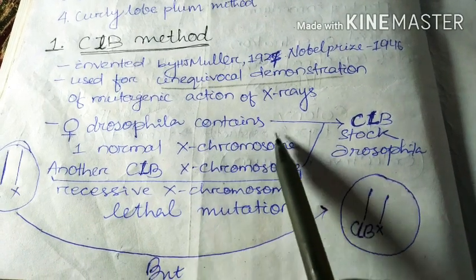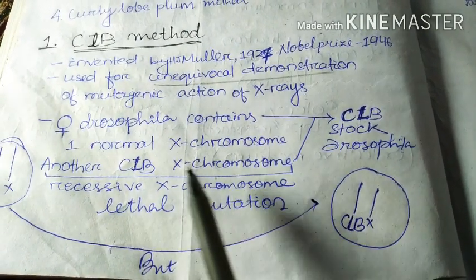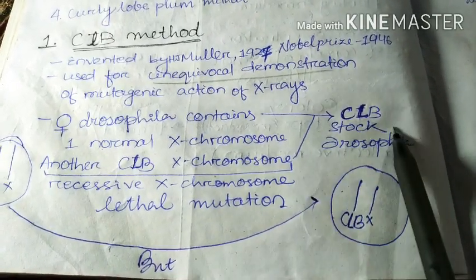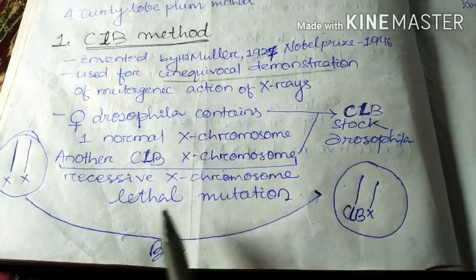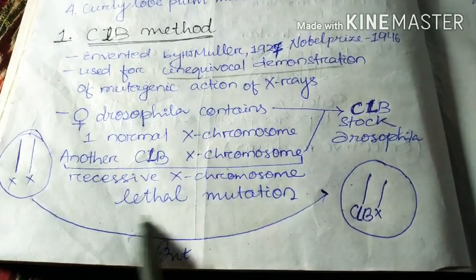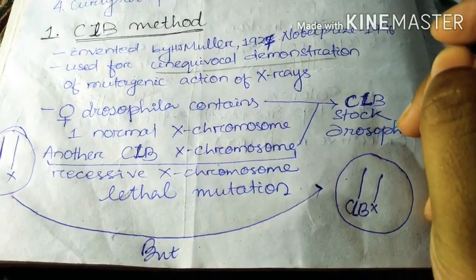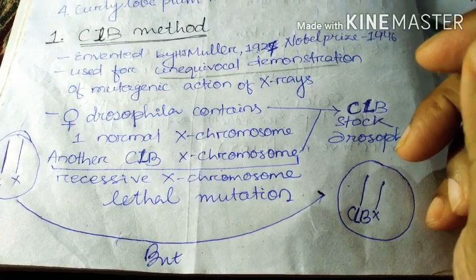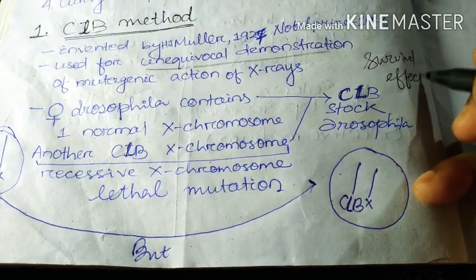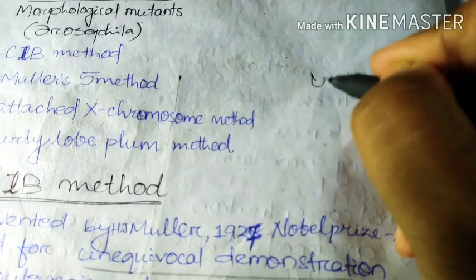The female Drosophila that contains the CLB X chromosome is called CLB stock Drosophila — meaning after treating with the CLB X chromosome, the female Drosophila are stocked or kept for the next experiments. This CLB X chromosome is the recessive X chromosome, that is the lethal mutation. Lethal mutation is of four types — four varieties — on the basis of survival effect.